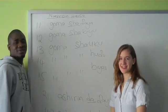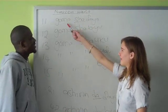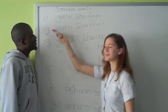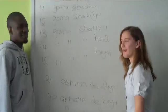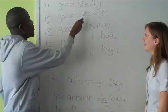When counting from 10 to 20, you use the connecting word sha to combine the first word 10 and the second word, depending on your second digit here. So, for example, 11 is pronounced Goma sha daya.